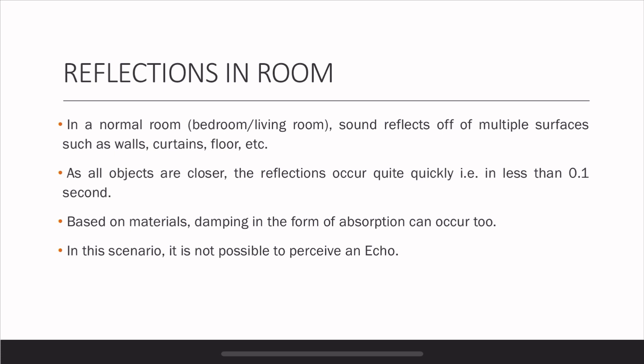In this process, the reflections occur quite quickly, and they do occur in less than 0.1 second because the distance is small and the speed of sound is 343 meters per second. In addition, there is also attenuation or damping in the form of absorption. So it is not possible to perceive an echo in a room — in a standard bedroom with a bed, curtains, wooden floor, and so on.